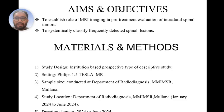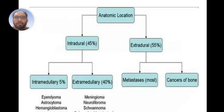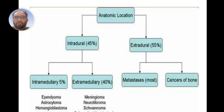Inclusion criteria includes patients with suspected spinal tumors. The tumors can be intradural or extradural. Intradural tumors may be intramedullary — including ependymoma, astrocytoma, and hemangioblastoma — or extramedullary, which includes meningioma, neurofibroma, schwannoma, and subarachnoid metastasis. Extradural tumors may be metastasis, which are most common, or cancers of the bones.